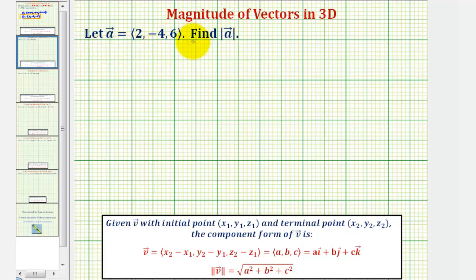We're given vector a in component form and asked to find the magnitude of vector a. Sometimes you'll see the symbol for magnitude expressed like this, as well as like this with two pairs of parallel bars.